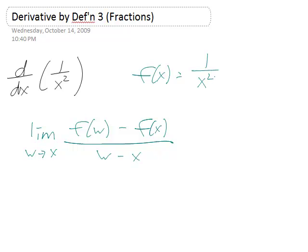There's a reason why I'm doing this, this one is actually a lot easier than the h approaching zero one. Of course if you had used h approaching zero, that would have still worked. So this is 1 over w squared minus 1 over x squared all over w minus x.